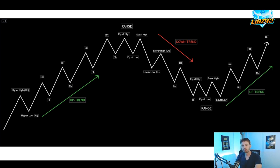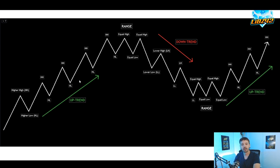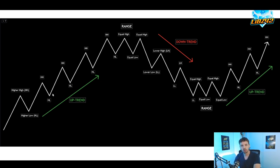Today we're going to be talking about market structure. Right here, you see an image of a pretty simple market structure chart with higher highs and higher lows. So what do you need to understand to identify market structure? It's very simple. You have two types of market structures: the first one, which is a trending market, and the second one, which is a ranging market.